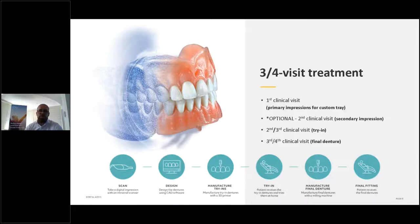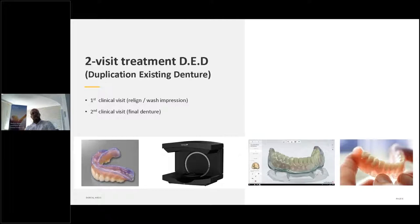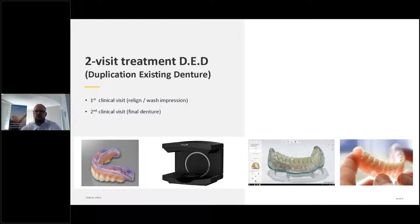Here's a picture of a finished denture with a digital site on it. The DED — duplicating an existing denture — was possible before but very complicated. In the latest 3Shape update, they created a new copy denture function that makes it much easier. You take the existing denture, do a wash impression, scan it — even with an intraoral scanner — load it into the software, which separates the teeth from the base, and go directly into manufacturing. It's quite an easy process.